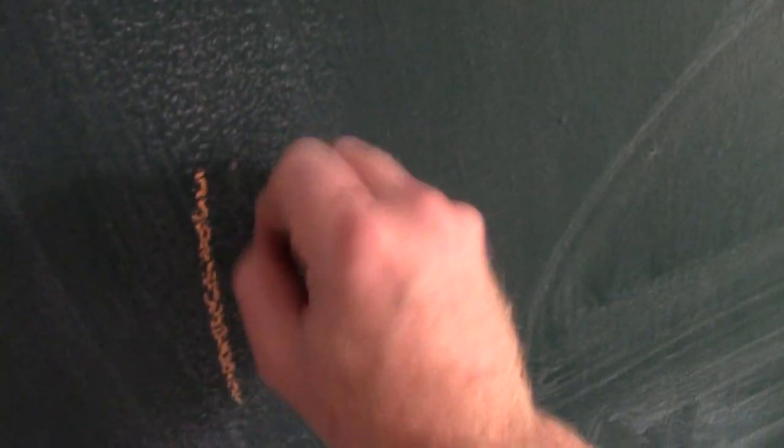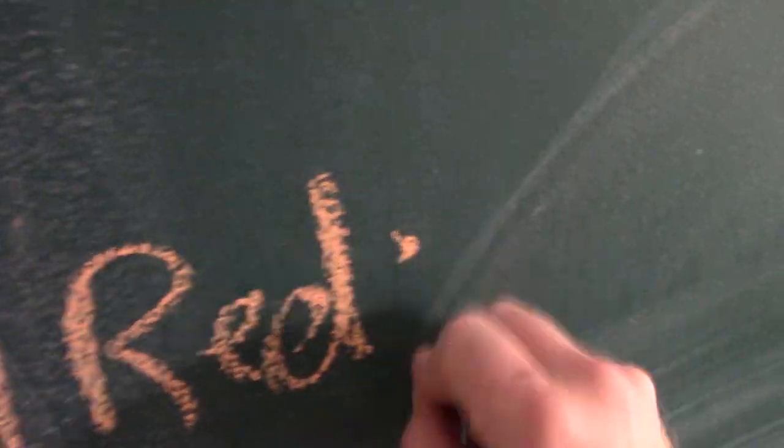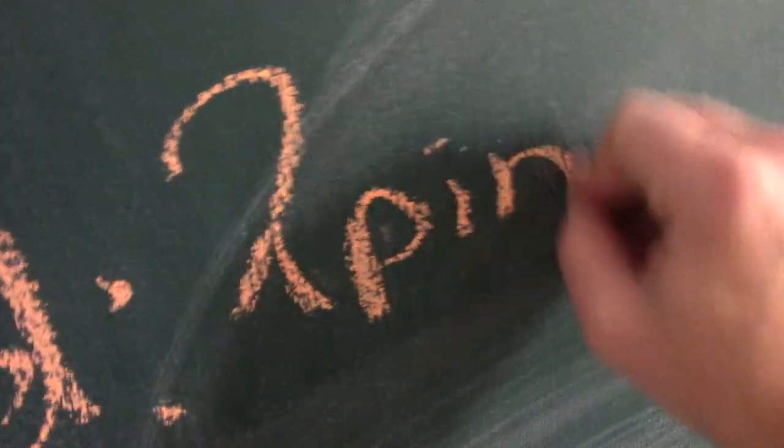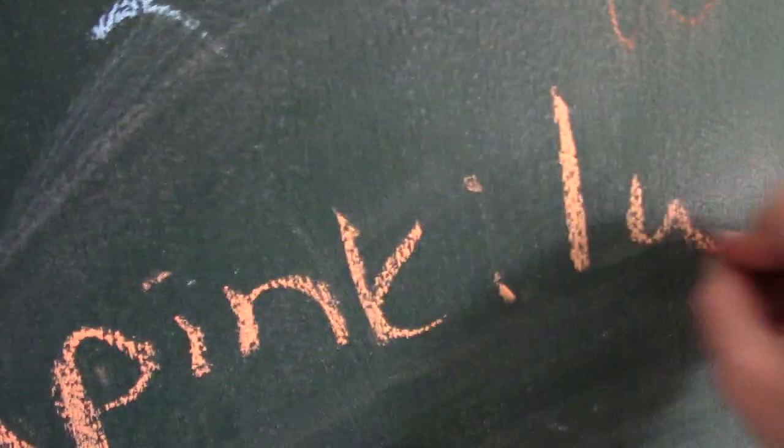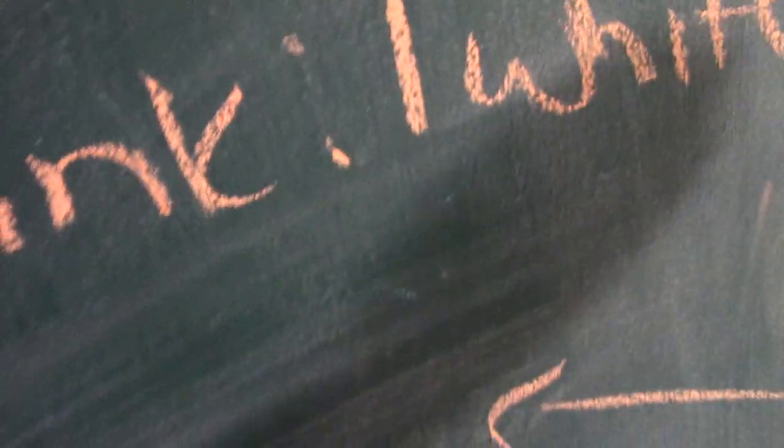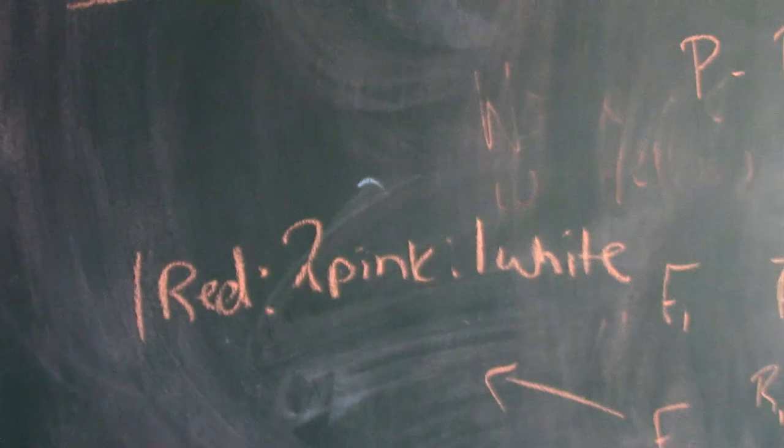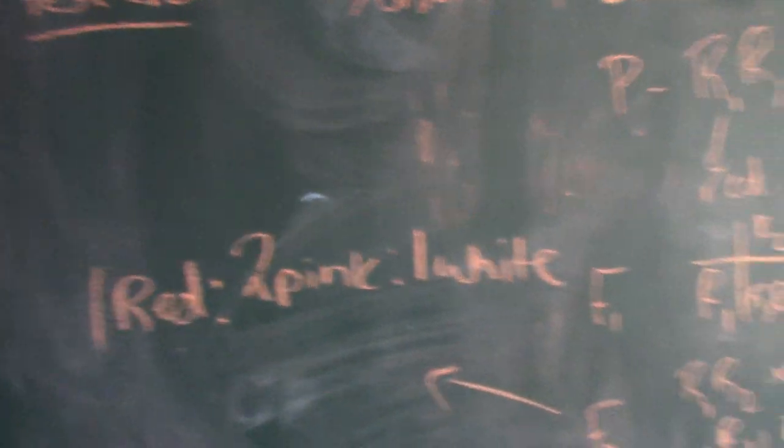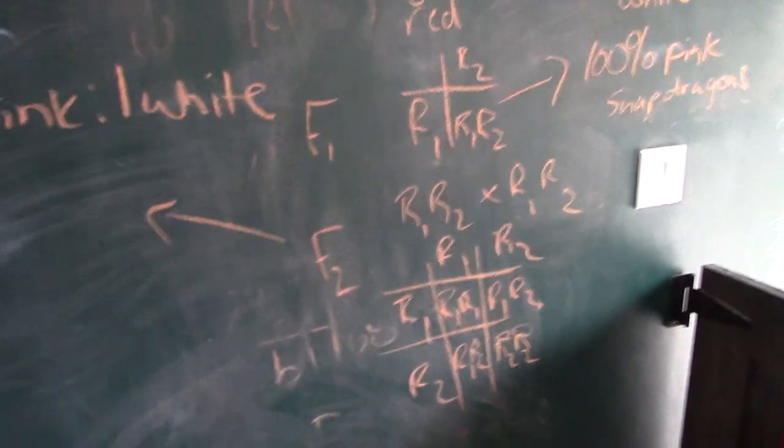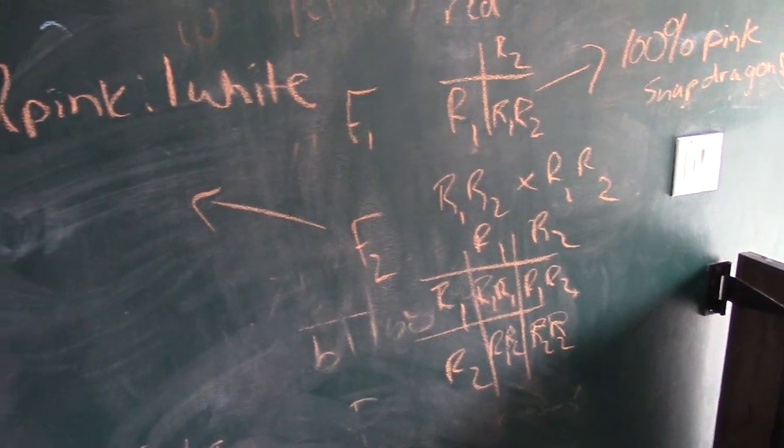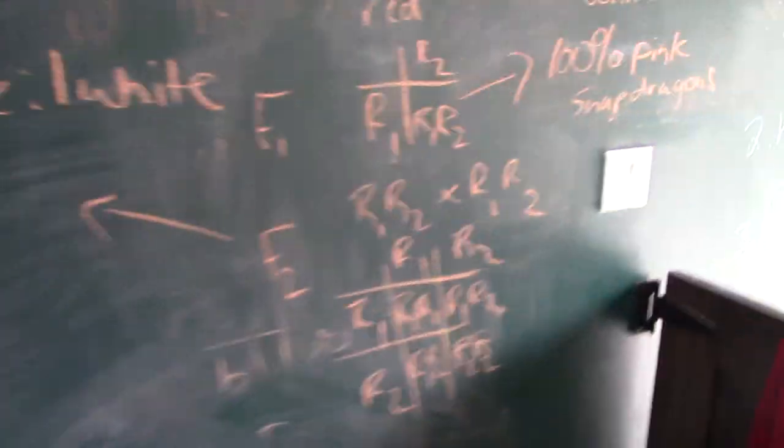So here's the deal with incomplete dominance, what's going to end up happening with the phenotype is you're going to get one red to two pink to one white individual. One to two to one. So you get this one to two to one phenotypic ratio with incomplete and codominance when you have two heterozygotes that breed together. So you should understand that.